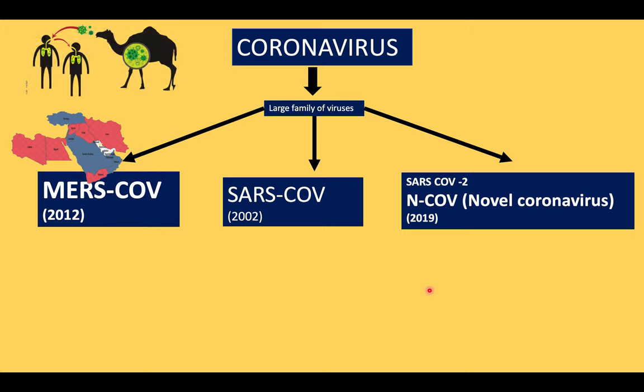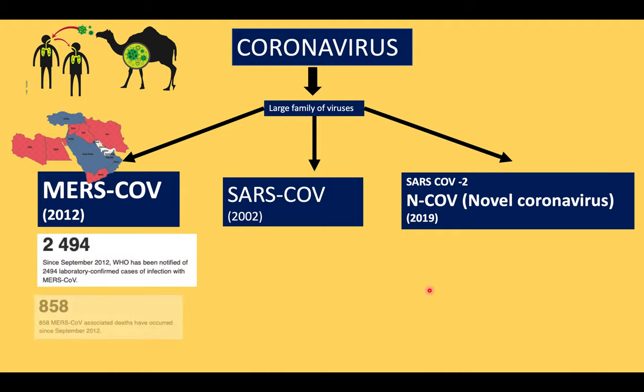MERS-CoV originated in the Middle East, hence the name Middle Eastern Respiratory Syndrome. It was a virus transmitted from camels to humans, and then via respiratory droplet transmission from humans to humans. It was reported in around 2,500 cases with 858 deaths, leading to a fatality rate of 37 percent.